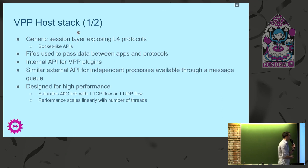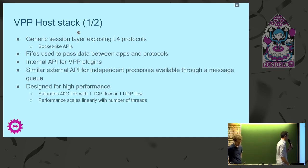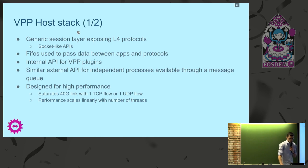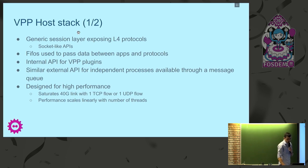More precisely, the VPP host stack is a generic session layer that exposes layer 4 protocols. The API is socket-like, meaning it tries to reproduce the Berkeley sockets API to make it easier to consume for external applications, even though the internal API is more efficient — in particular, it doesn't require copies to pass data around. Instead, we use FIFOs where applications can write data and protocols can consume it, and vice versa. It's designed for high performance: we can almost saturate a 40 gig link with one TCP flow, and fully saturate a 40 gig link with one UDP flow.